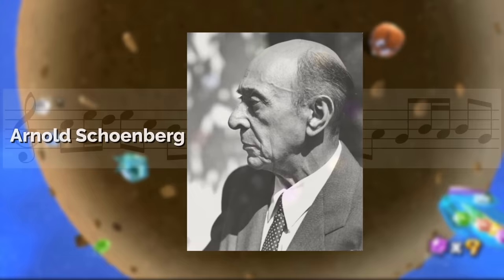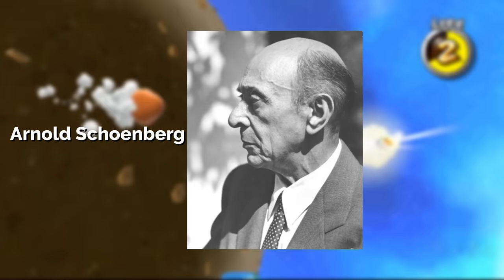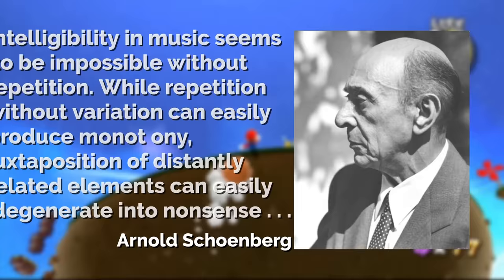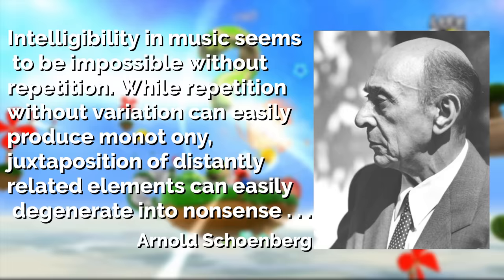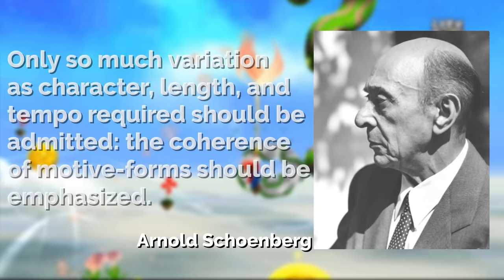In Fundamentals of Musical Composition, Arnold Schoenberg writes about finding the right balance between these two extremes by figuring out the appropriate amounts of variation and repetition to use when composing music. Intelligibility in music seems to be impossible without repetition. While repetition without variation can easily produce monotony, juxtaposition of distantly related elements can easily degenerate into nonsense. Only so much variation as character, length, and tempo required should be admitted.